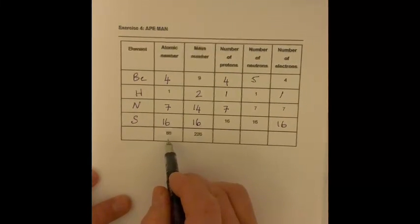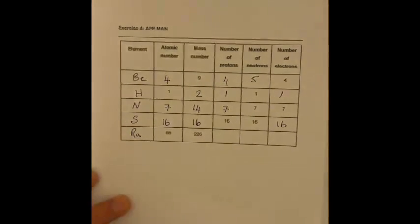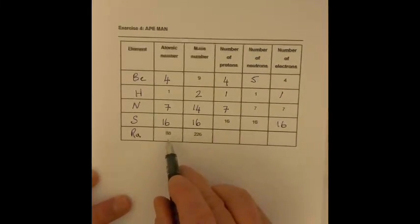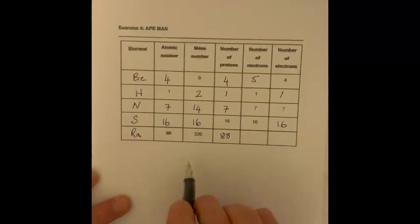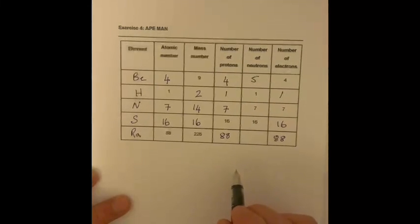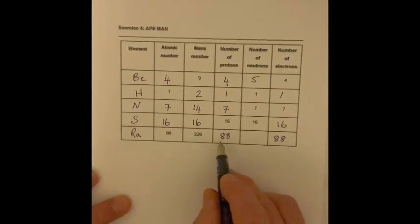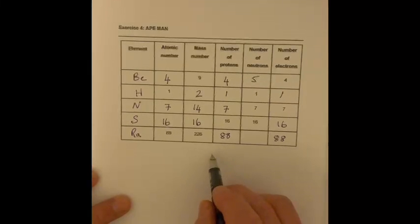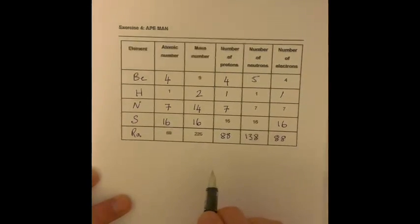We've got an atomic number of 88. If we want to look that up, atomic number 88 is radium. We can see that therefore we must have 88 protons. The number of protons and the atomic number are the same. That means we must also have 88 electrons, because it's an atom, so it's uncharged. And if we take 88 away from 226, we will see that we're left with 138 — that's going to be the number of neutrons.